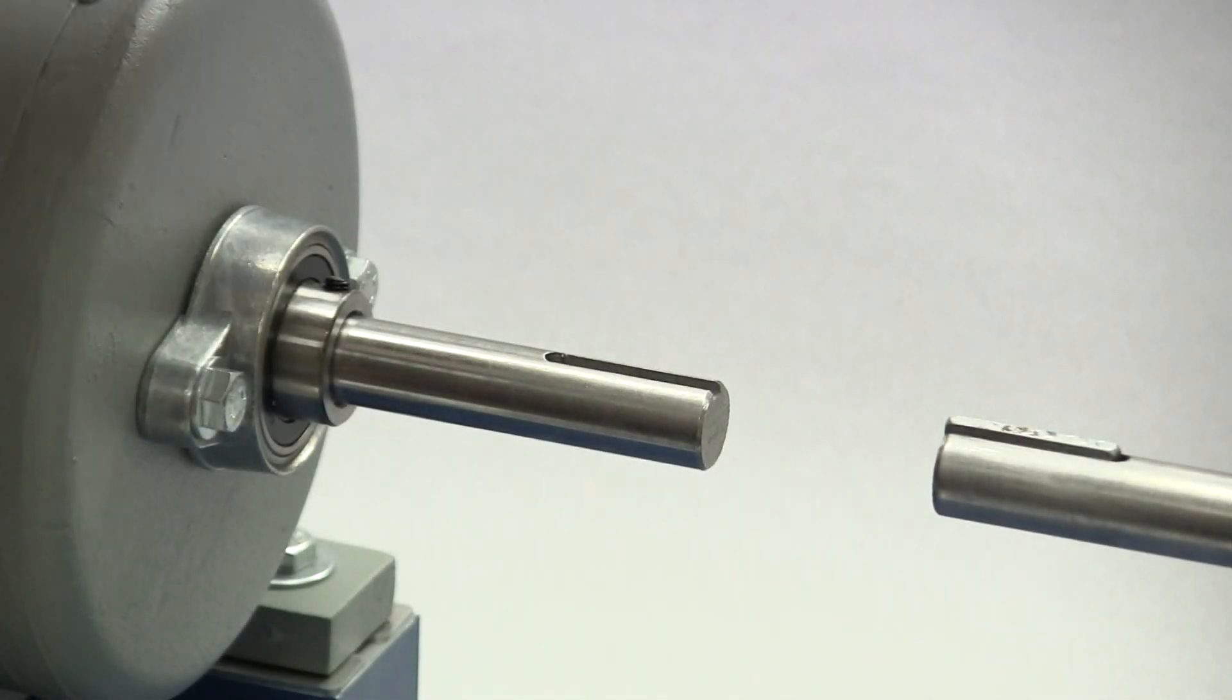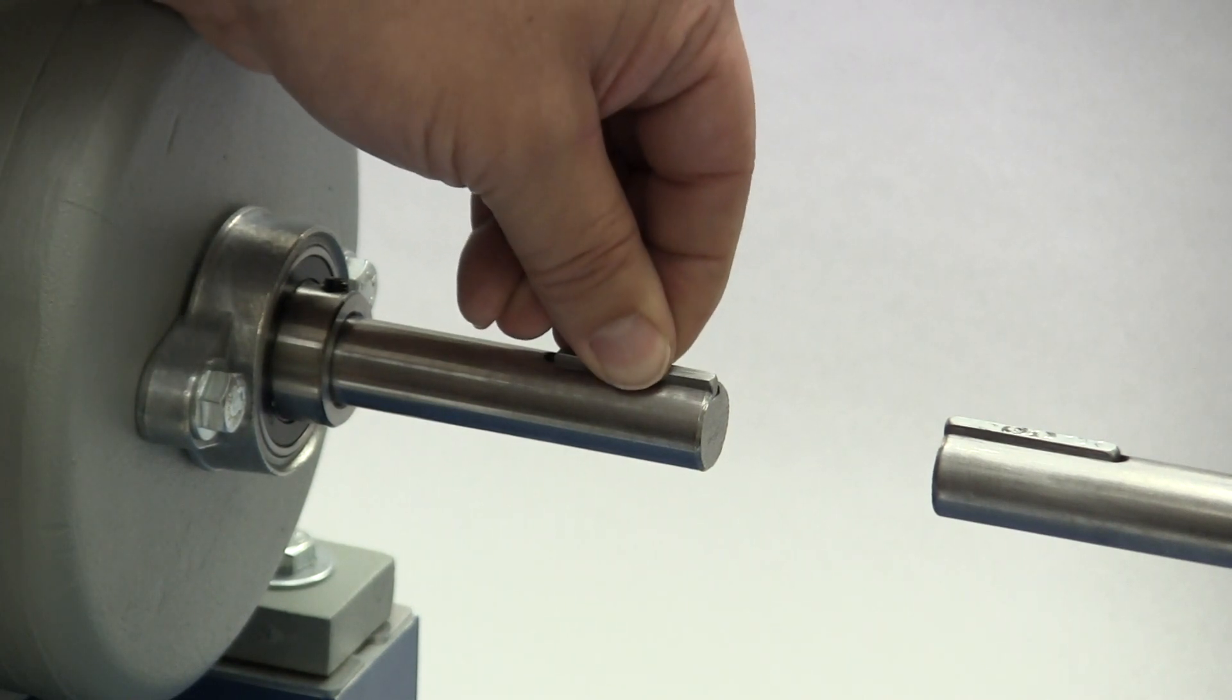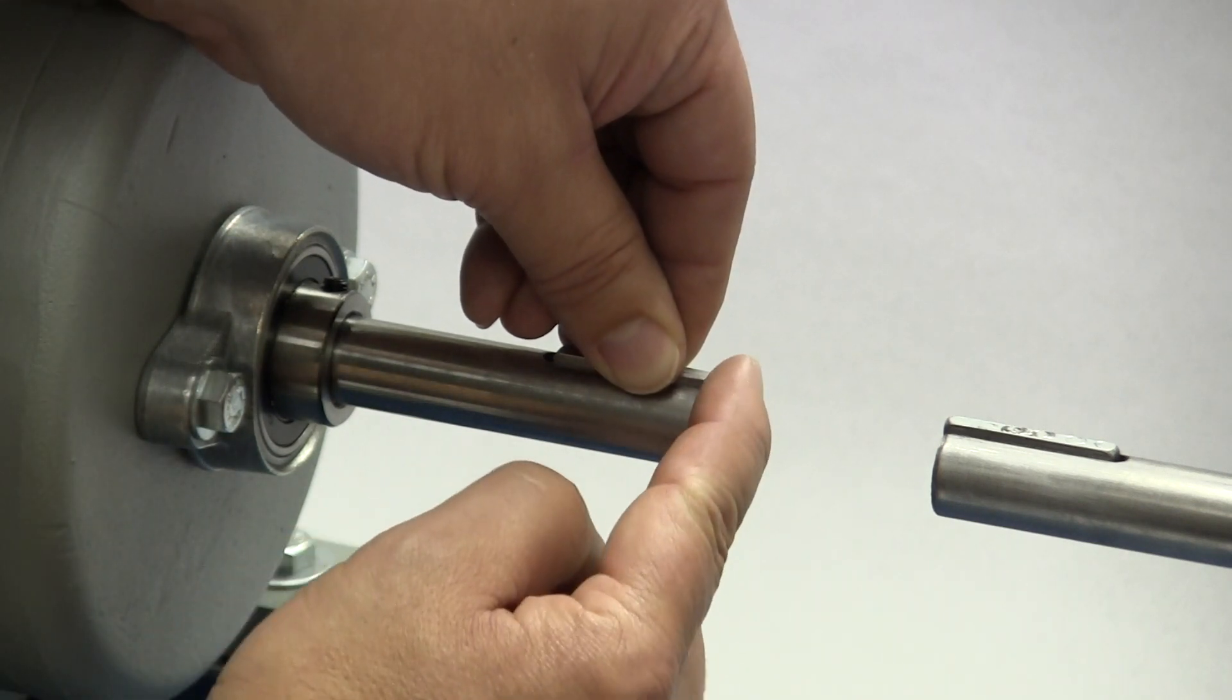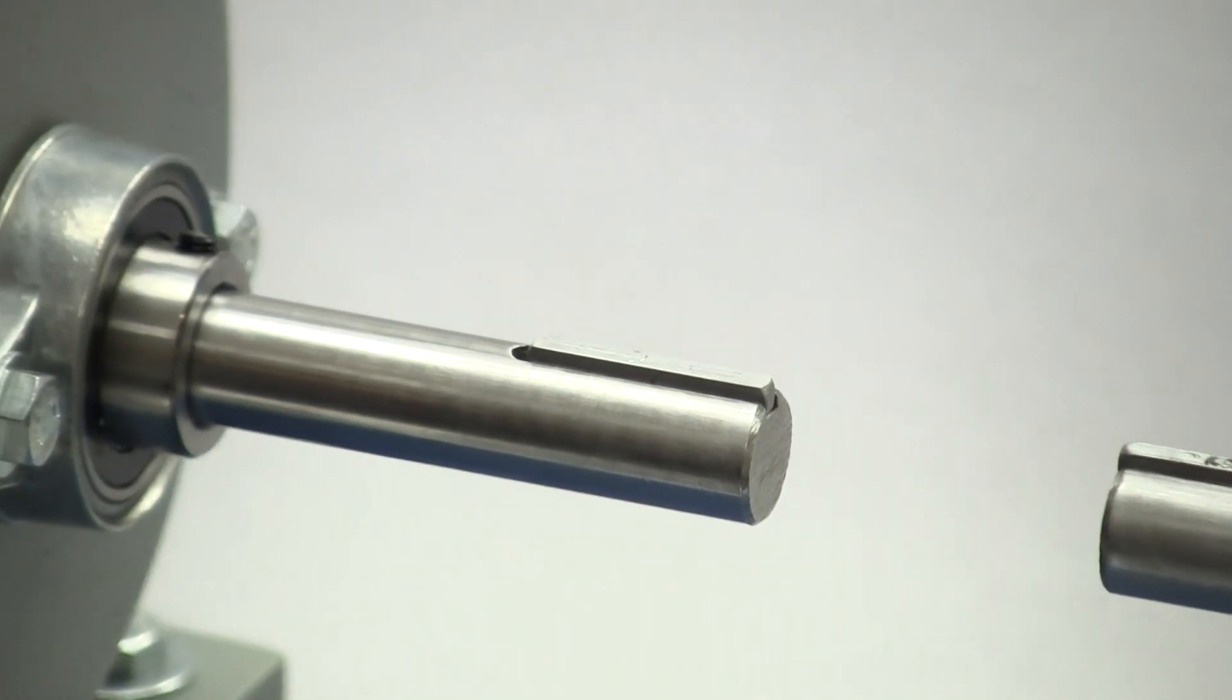Before installing the spacer hub, place the key in the keyway on the shaft. The key should fit snugly into the keyway with no side-to-side movement. The end of the key should line up with the end of the shaft and the spacer hub once the hub is installed.